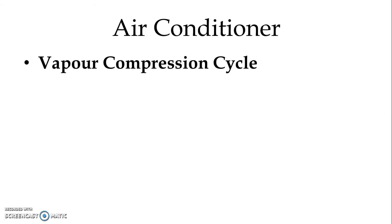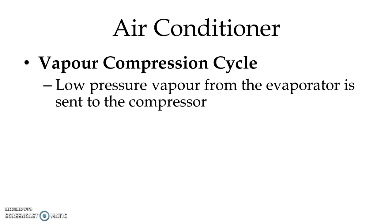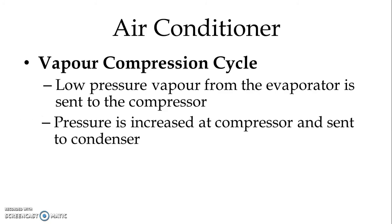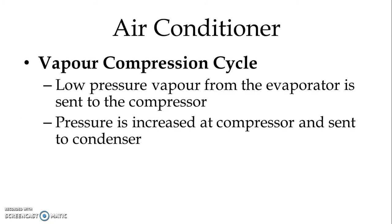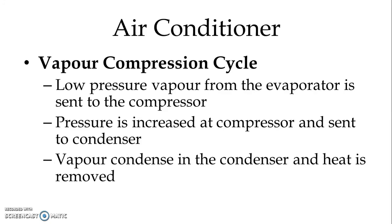Next is the vapor compression cycle. When we switch on the air conditioner, low pressure vapor from the evaporator is sent to the compressor. At the compressor, pressure is increased and with higher pressure the vapor is sent to the condenser. The vapor condenses in the condenser and heat is removed from the vapor.